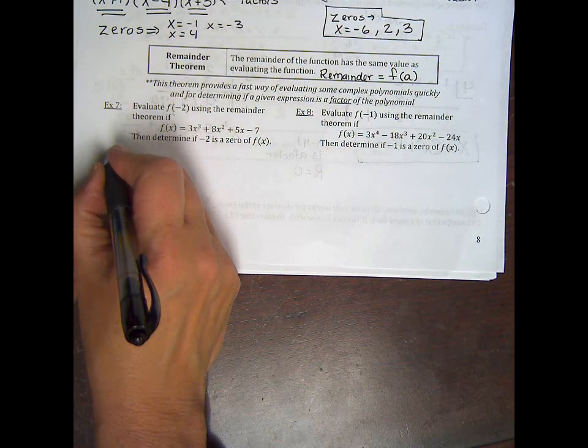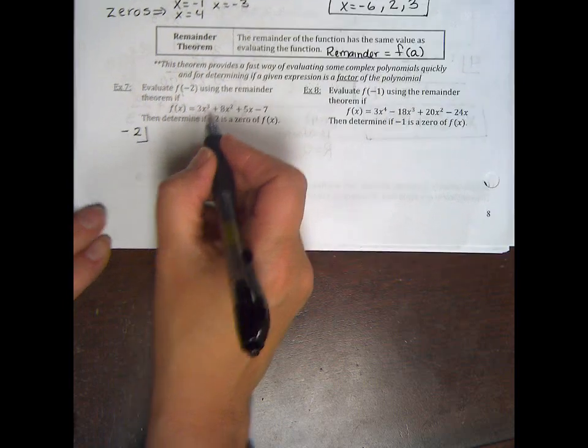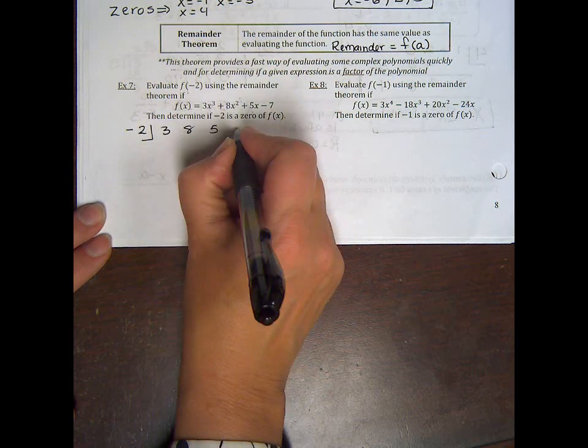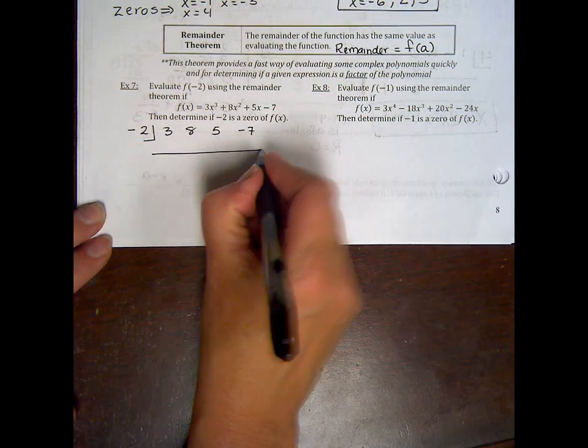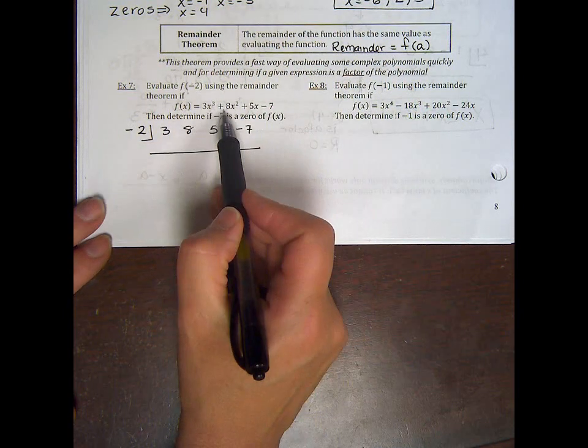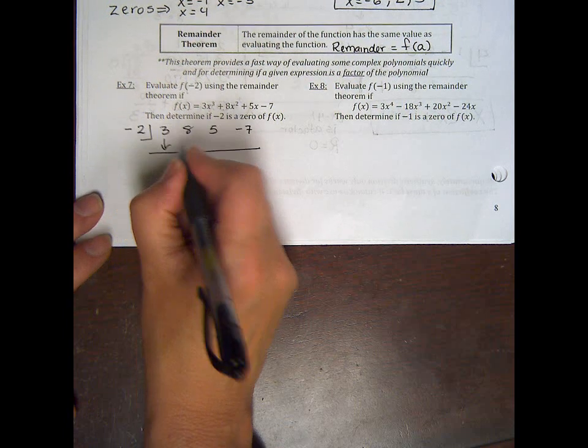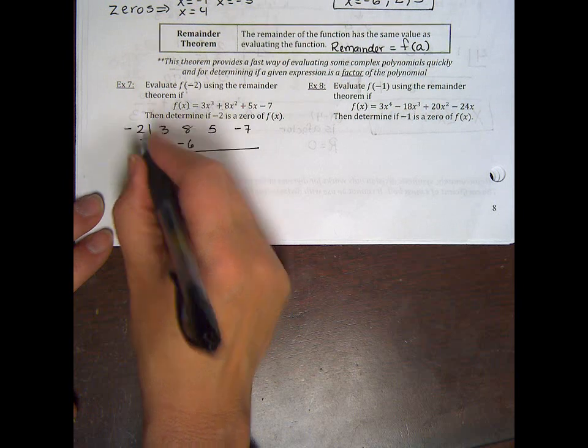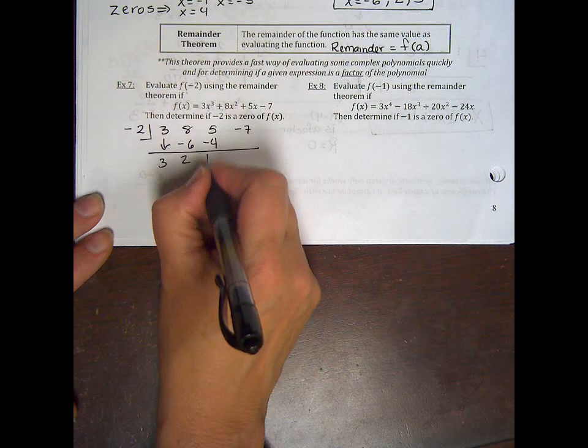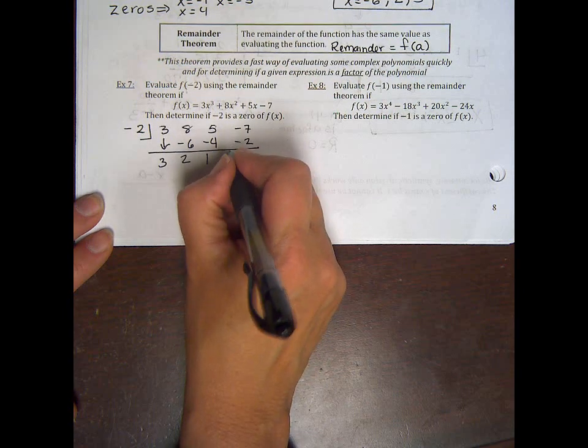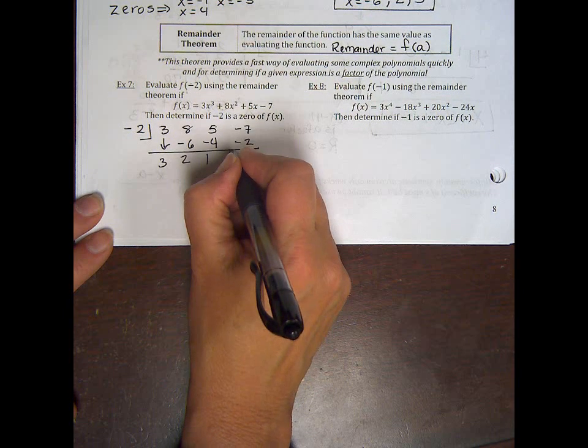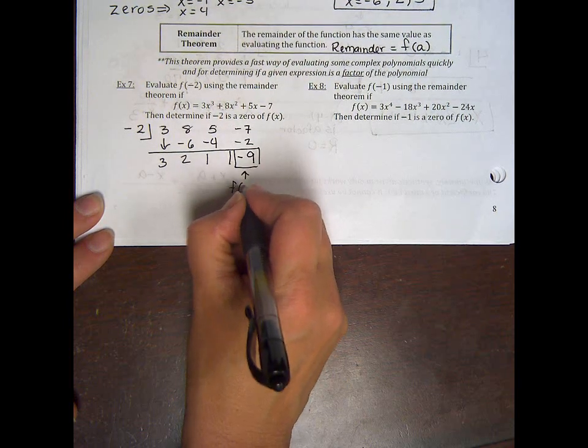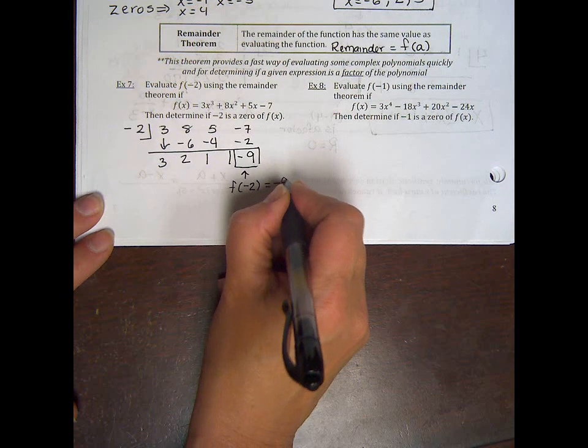So here, if we want to evaluate x of negative 2, if we divide by negative 2 into, synthetically, into 3, 8, 5, negative 7, the remainder I get will be the same thing had I just plugged in negative 2. Handy dandy. So if I drop the 3, I get negative 6. I combine, I get 2. Negative 4. Combine, 1. Negative 2. Combine, and I get negative 9.